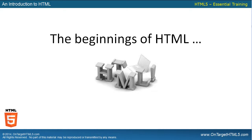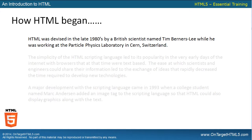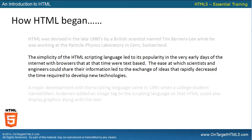So the beginnings of HTML — how HTML began. HTML was devised in the late 1980s by a British scientist named Tim Berners-Lee while he was working at the Particle Physics Laboratory in CERN, Switzerland. The simplicity of the HTML scripting language led to its popularity in the very early days of the Internet with browsers that at the time were text-based. The ease at which scientists and engineers could share their information led to the exchange of ideas that rapidly decreased the time required to develop new technologies.